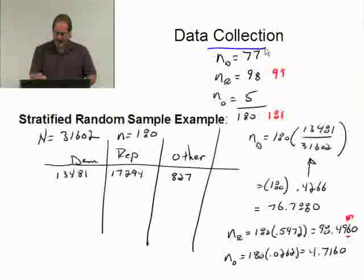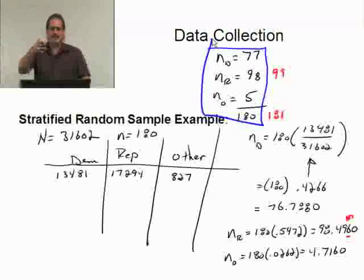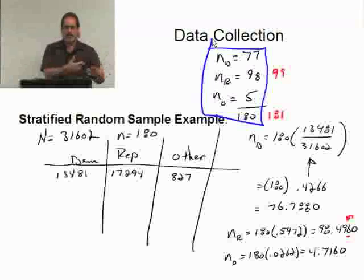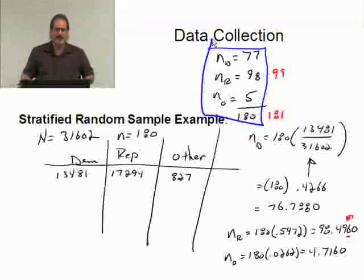So, now I have the actual values or the number that I will sample from each group. It's a simple matter of going back to each group, the voter registration information, and contacting them by phone using a simple random sample or a systematic 1 in k random sample within each group.